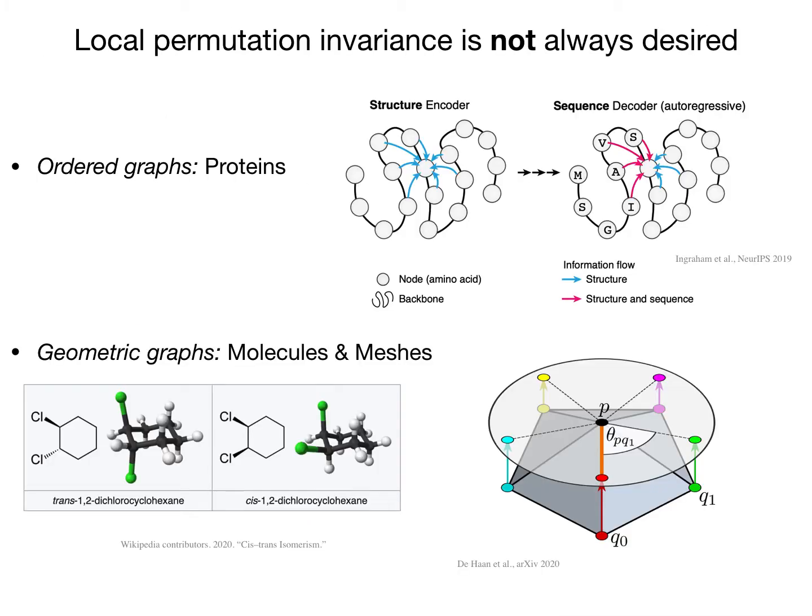However, local permutation invariance is not always desired. For example, in proteins, nodes have a clear ordering since they are an amino acid sequence, or in geometric graphs, nodes should be treated differently based on their position in their underlying geometric space.